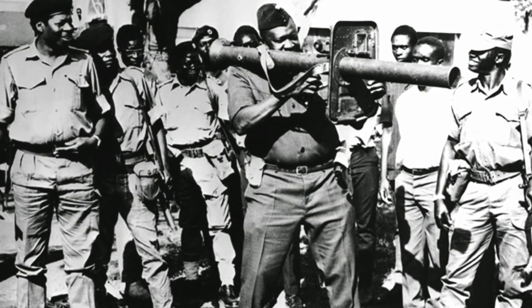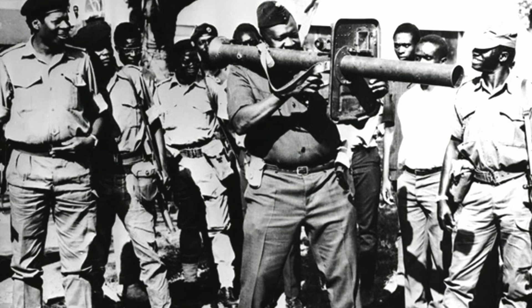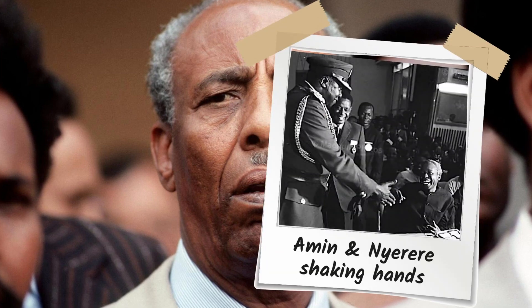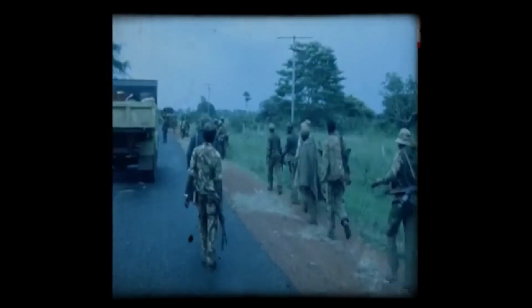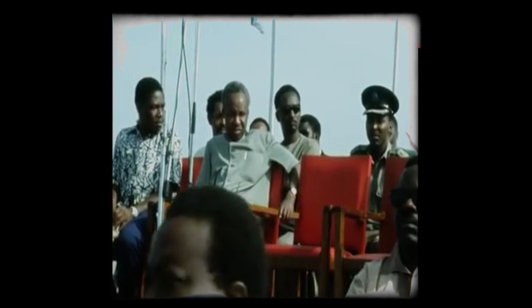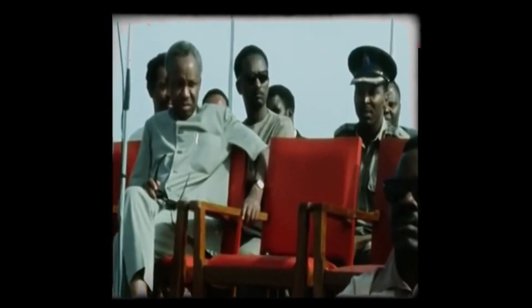In response, Amin ordered a bombing of towns in Tanzania situated near the border. Although Nyerere's military advisors urged him to reciprocate, he chose to settle the conflict through a settlement brokered by the president of Somalia, Siad Barre. The outcome of the negotiations was the Five Point Mogadishu Agreement, signed by both Tanzania and Uganda on October 5, 1972. The agreement called for the withdrawal of troops to a distance of 10 kilometers from the border and a cessation of support for forces hostile to the opposing regime. Despite the agreement signing, tension between the two leaders persisted.